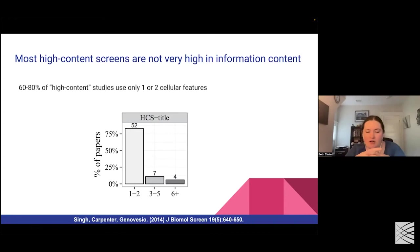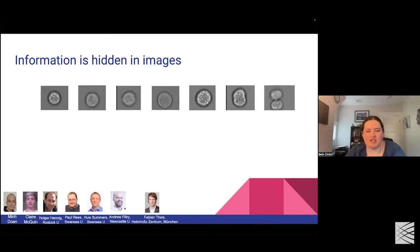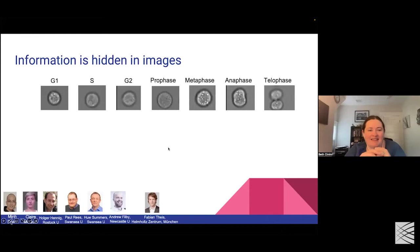We know there's information in images that human brains — which are designed to react quickly to the environment and not necessarily to quantify things — just are not privy to. These are imaging flow cytometer images of cells in different cell cycle phases. When I've given this talk in person and asked who wants to raise their hand and tell me what cell cycle phase is which, I've never gotten anybody to raise their hand. This is not a task that human brains are good at.